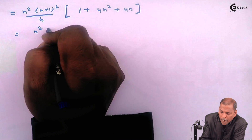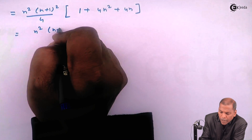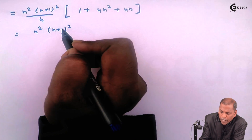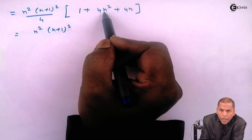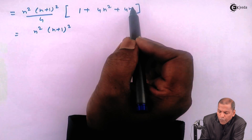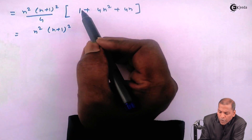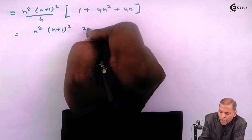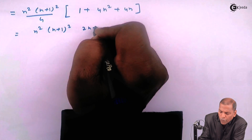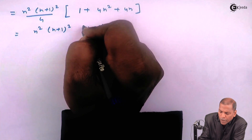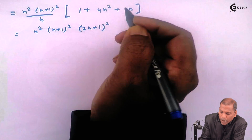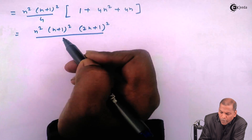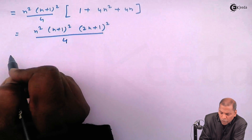We observe that 4n² + 4n + 1 is a perfect square — it equals (2n+1)². So the expression becomes n²(n+1)²(2n+1)²/4.